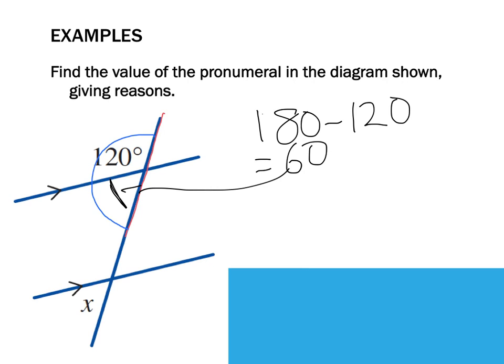Now that I've found that, this guy in here - this angle in here - is corresponding to this angle in here. Those two are corresponding, which means that X equals 60 degrees.